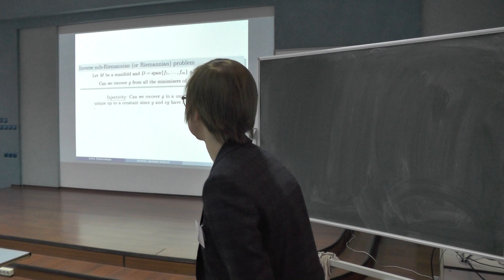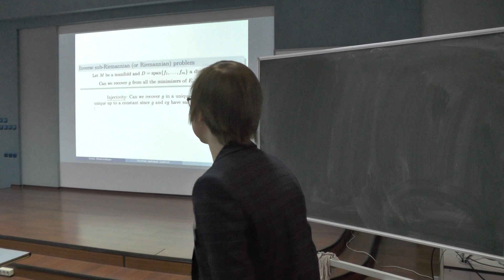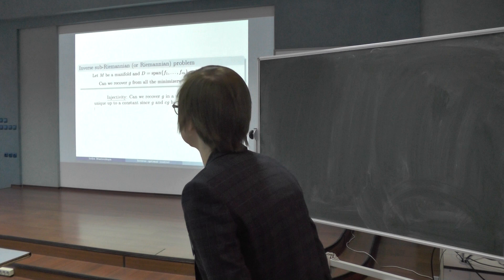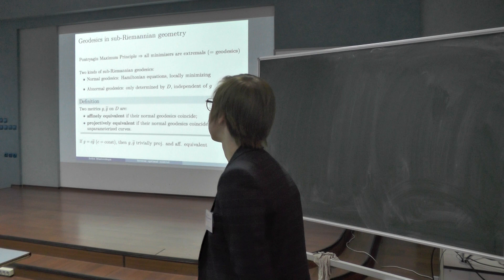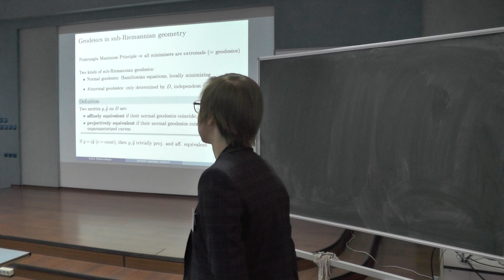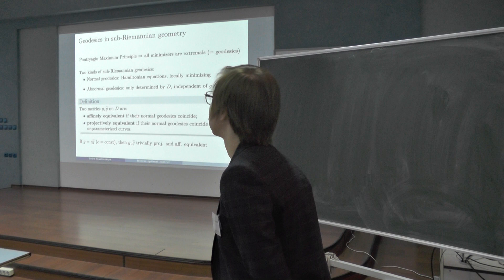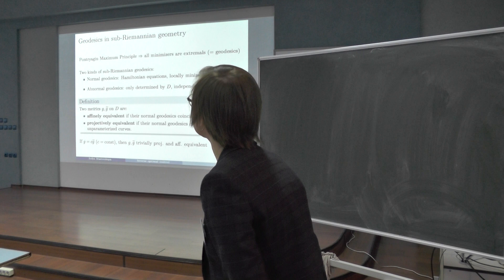With these classes of cost and dynamics, the inverse optimal control problem is called the sub-Riemannian problem, and it is stated as follows. We have a manifold M and a given distribution D. The question is: can we recover the metric from the given minimizers of the energy and/or from the given minimizers of the length? Injectivity asks whether we can recover the metric in a unique way. By the Pontryagin maximum principle, all minimizers are extremals; in sub-Riemannian geometry they are called geodesics, and there are two kinds: normal and abnormal.